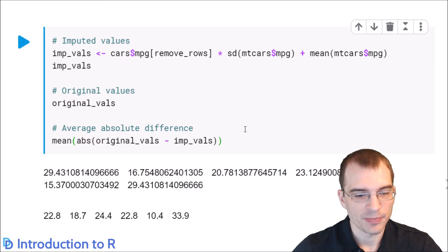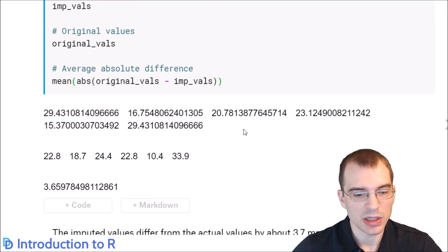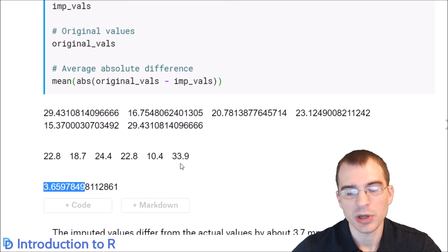Let's run that. We can see that, on average, the new MPG values are different than the original ones by 3.6 MPG. It's hard to know exactly how good of an imputation that is. One thing we could do to get a sense of how strong of an imputation method that was is to compare it to something simpler, such as just using the median or mean value to impute the missing values.